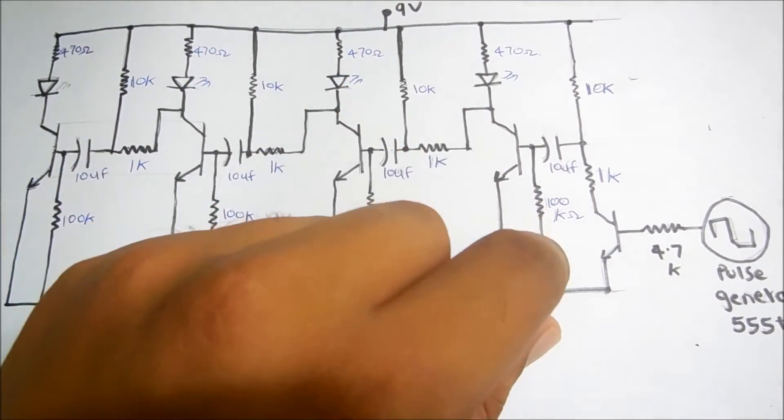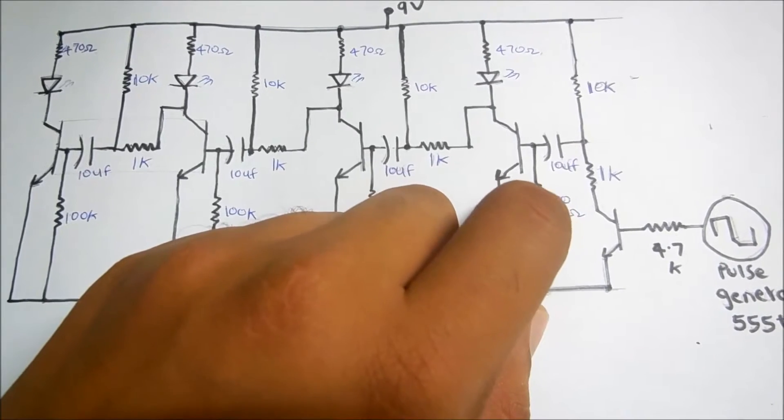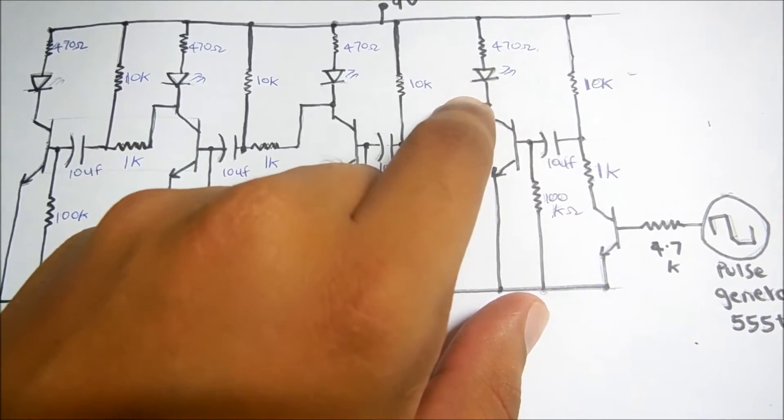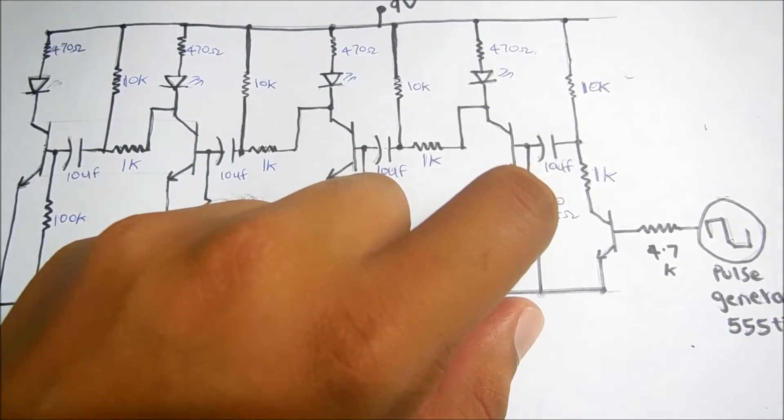This is an edge detector with a higher RC constant, which means it will give a detection pulse of longer duration depending on the RC constant.